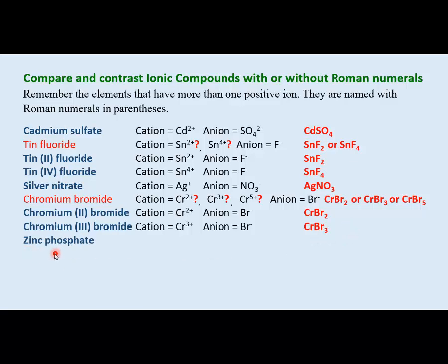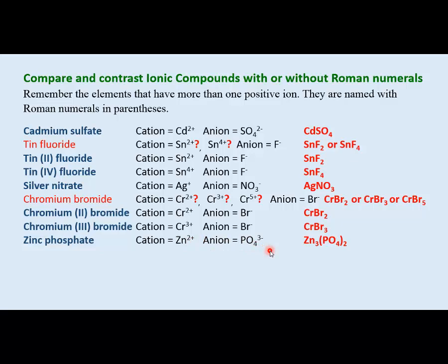With correct names: chromium(II) bromide gives CrBr₂, chromium(III) bromide gives CrBr₃. For zinc phosphate: zinc always forms +2 cations, so no Roman numeral needed. Phosphate is -3, zinc is +2. Using the crossover rule: 3 zinc cations (totaling +6) balance 2 phosphate ions (totaling -6), giving Zn₃(PO₄)₂. The ratio cannot be simplified further.